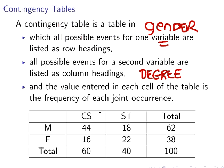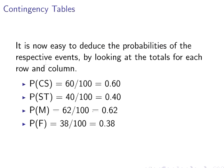Each value entered in each cell of the table is the frequency of each joint occurrence. For example, we had 44 males studying computer science. I've also included the marginal totals — the row totals and the column totals — so we have 62 males, 38 females, 60 studying computer science, and 40 studying statistics, giving 100 students altogether.